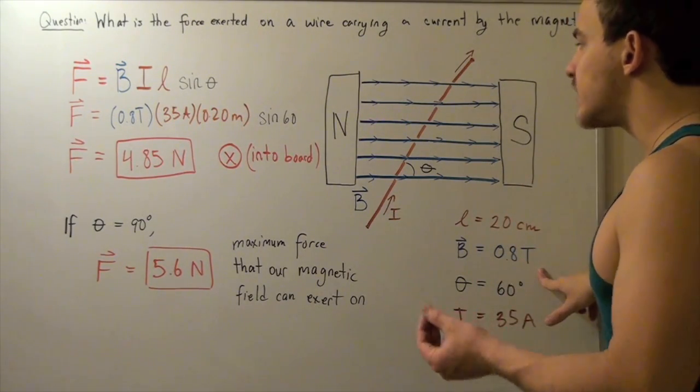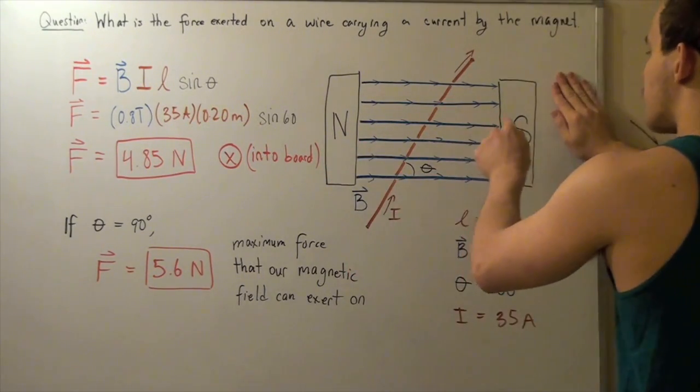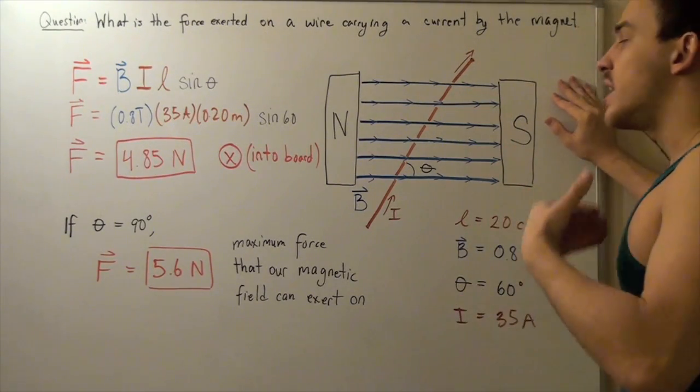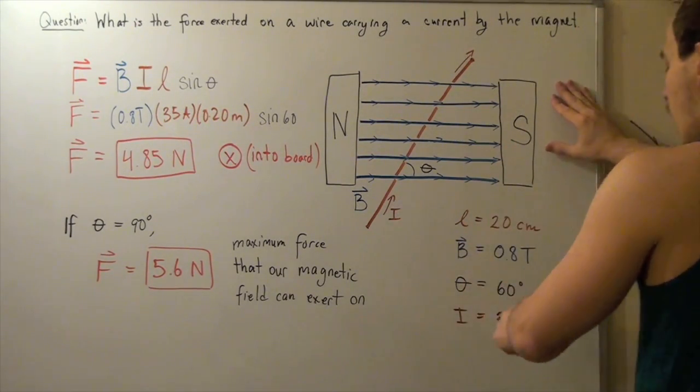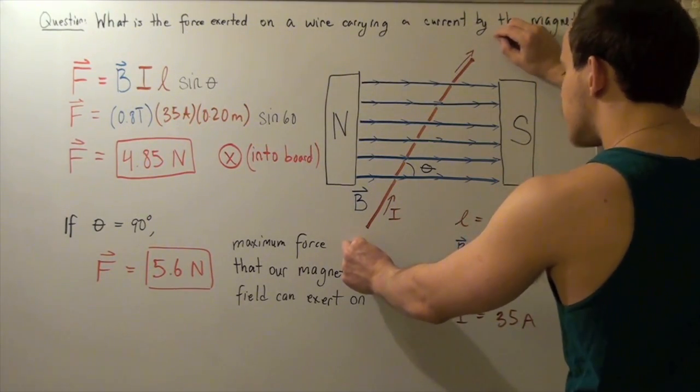So, our field lines, our magnetic field lines, start in our north pole and end up in our south pole. Now, suppose we also place a wire that carries a current of 35 amps, and we place the wire in the midst of this magnetic field.